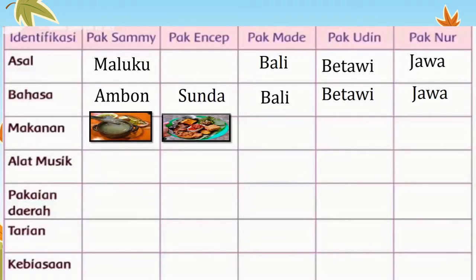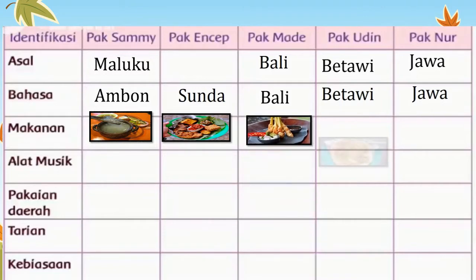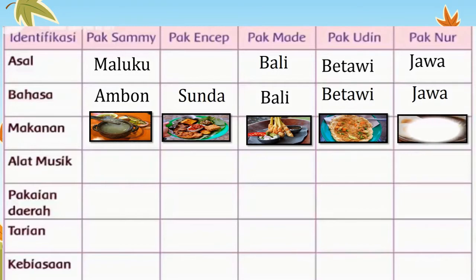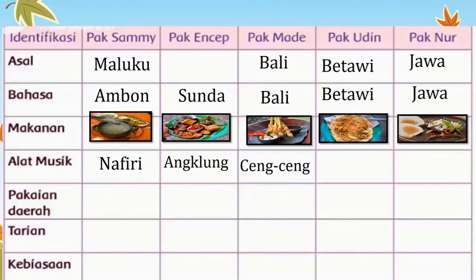Makanan khas dari Maluku yaitu Papeda. Makanan khas dari Sunda adalah Nasi Jamblang. Makanan khas dari Bali adalah Sate Lilit Bali. Makanan khas dari Betawi yaitu Kerak Telor. Sedangkan dari Jawa yaitu Rawon. Alat musik Maluku adalah Nafiri, dari Sunda Angklung, dari Bali Cengceng, dari Betawi Tehyan, dan alat musik dari Jawa yaitu Gamelan.